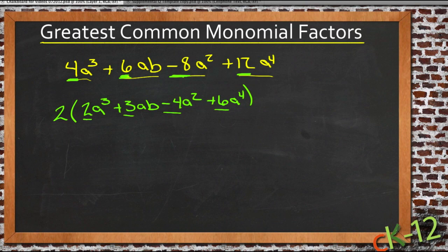So now I can move on to the variables. Here I have an a³, this is a times a times a, remember what that cubed means. And this is a times b, this one is a times a, and this one is a times a times a times a.